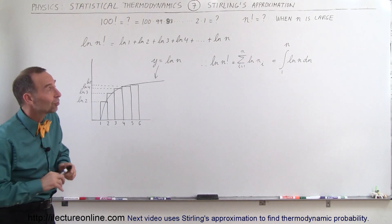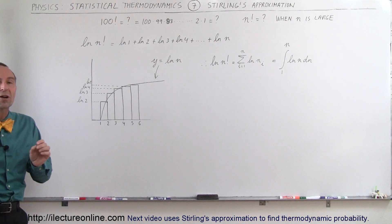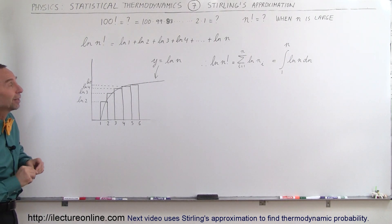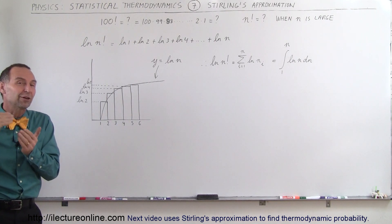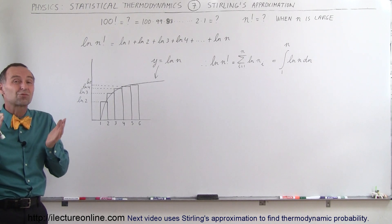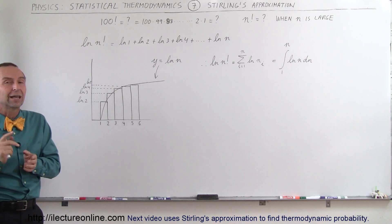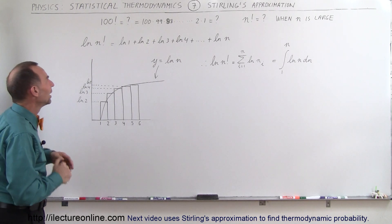Someone very smart named Stirling figured out how to approximate that number. And it turns out, for n being a very large number, his approximation is extremely accurate. Let me tell you why that is so.